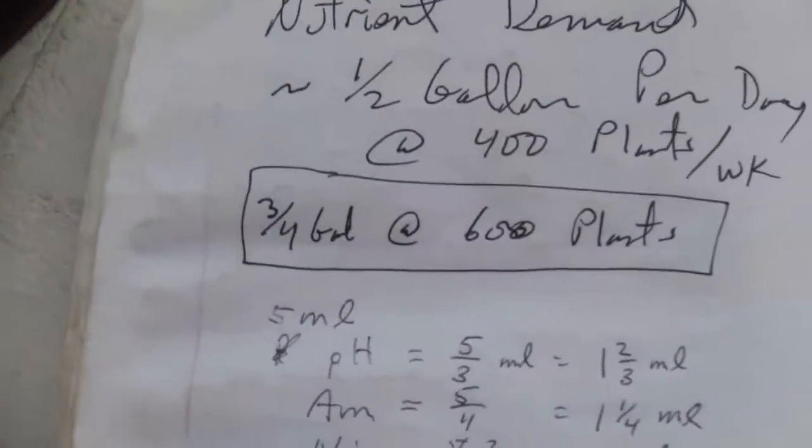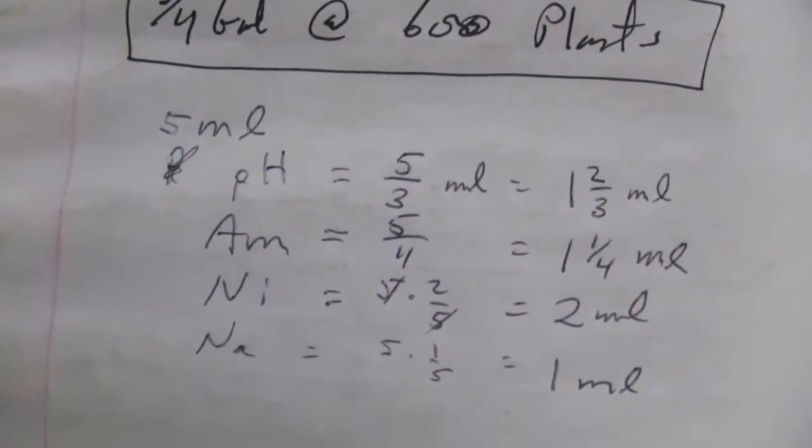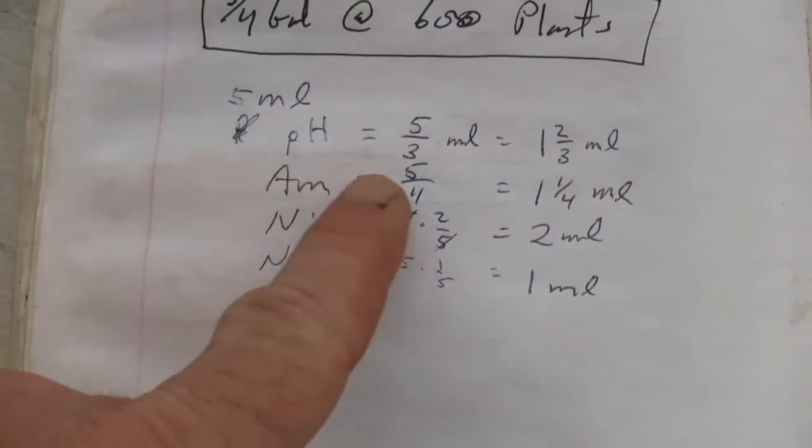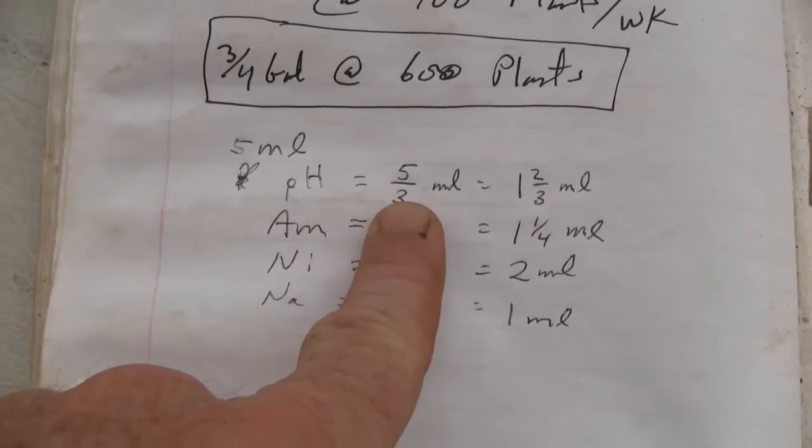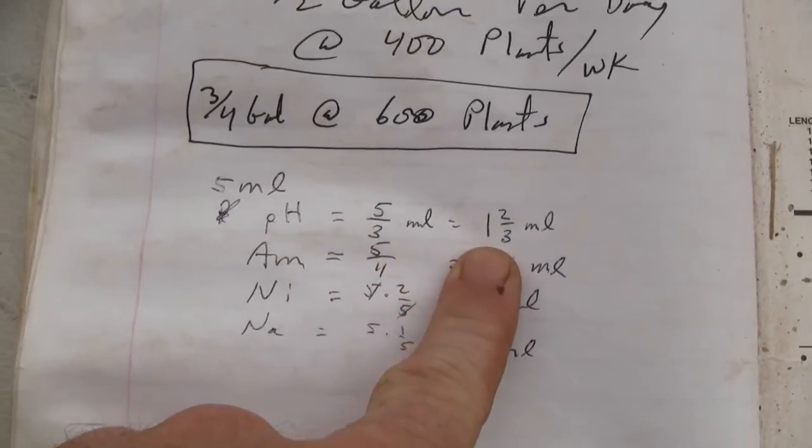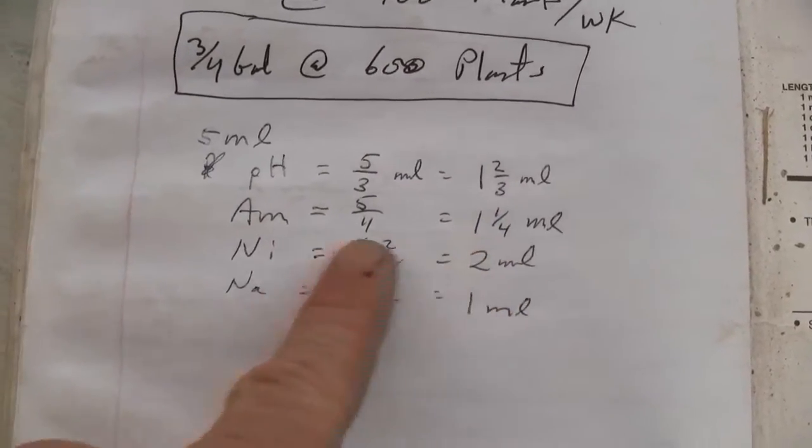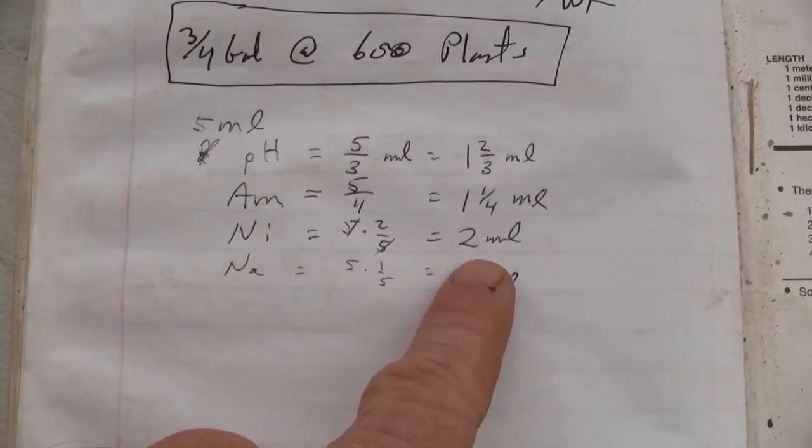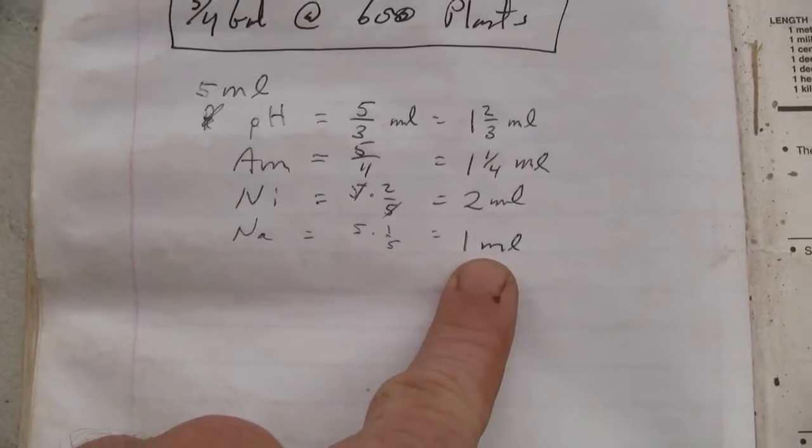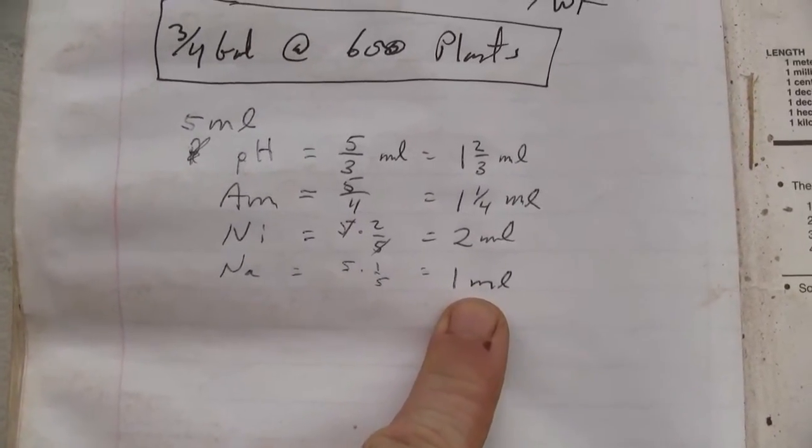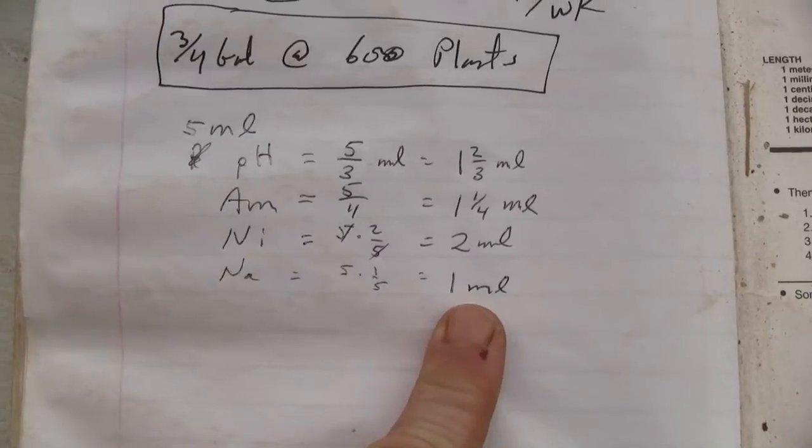The line is set at five milliliters. So that means pH needs to be five thirds of a milliliter which is one and two thirds. Ammonia is one and a quarter milliliters. Nitrite is two milliliters. Nitrate is one milliliter.